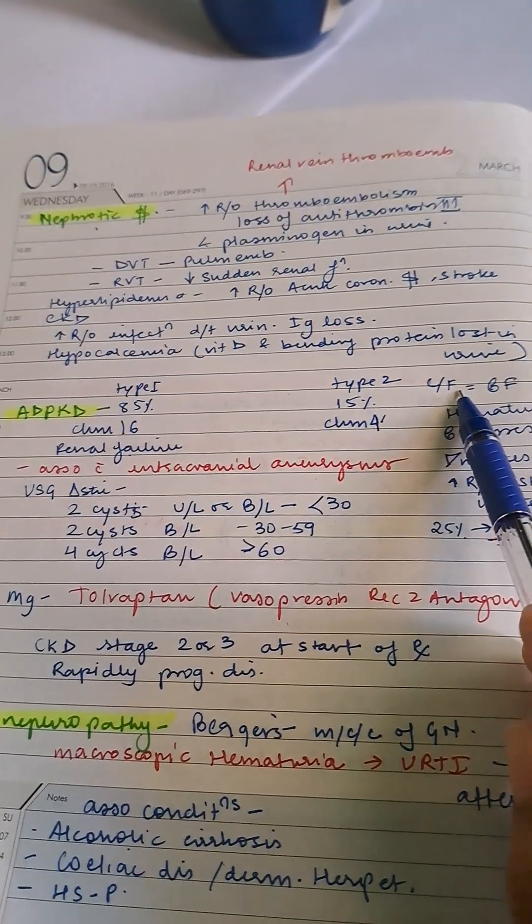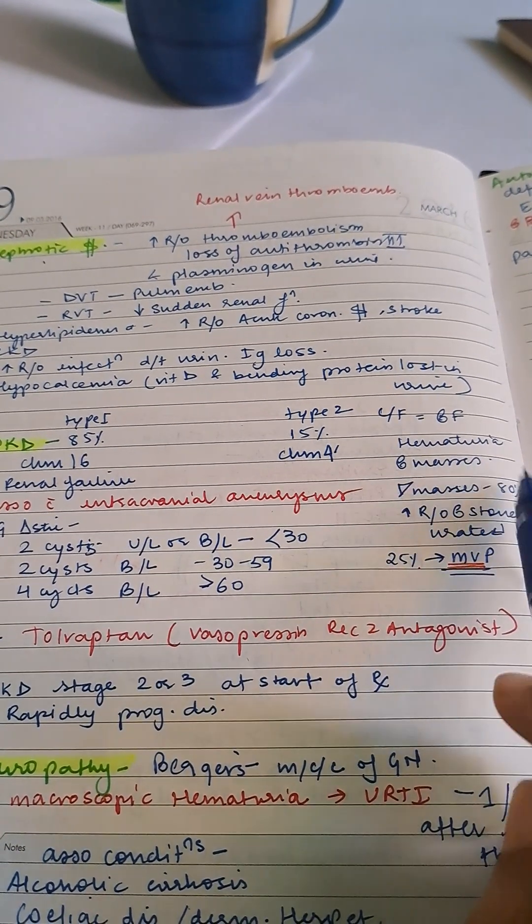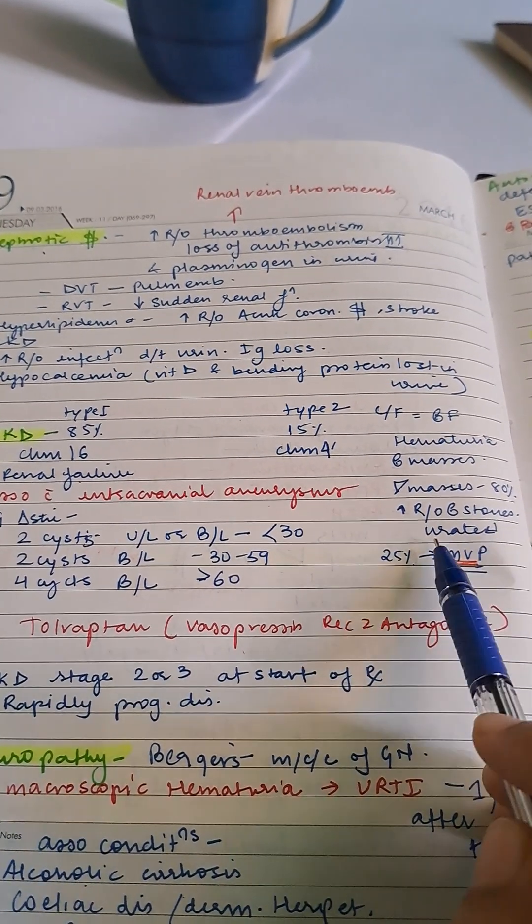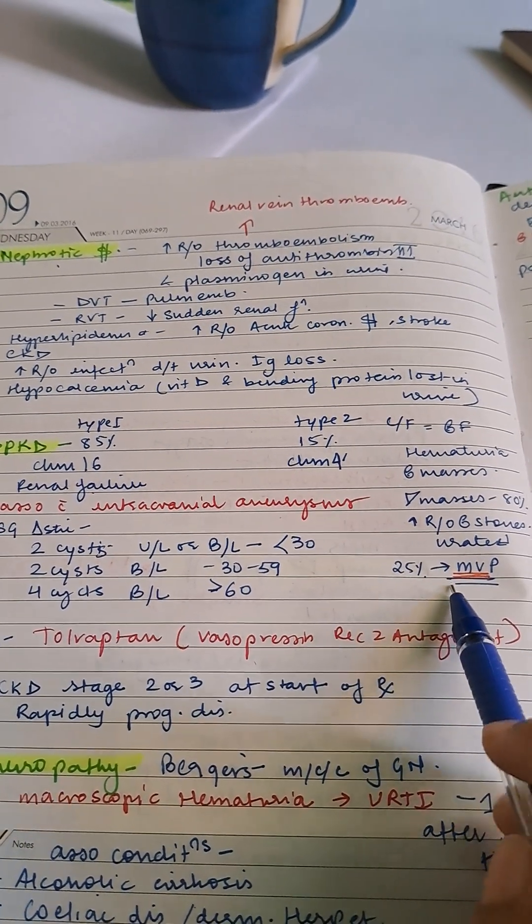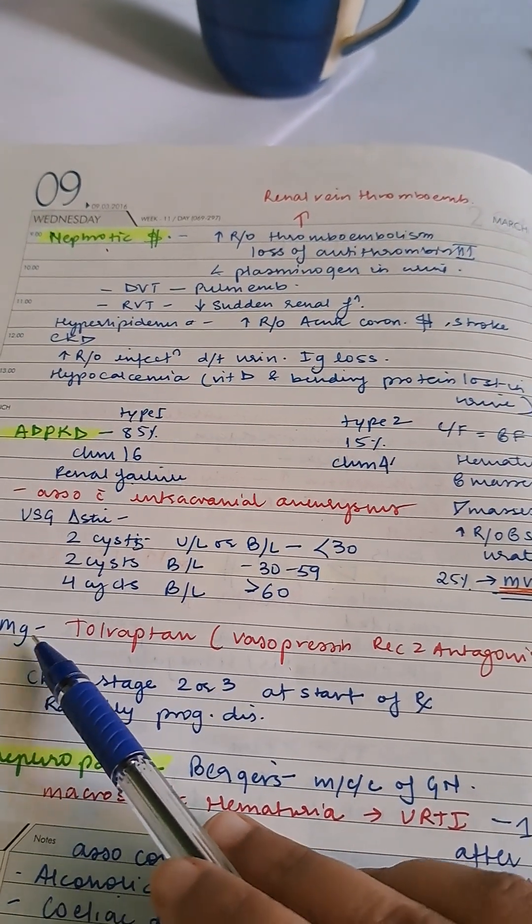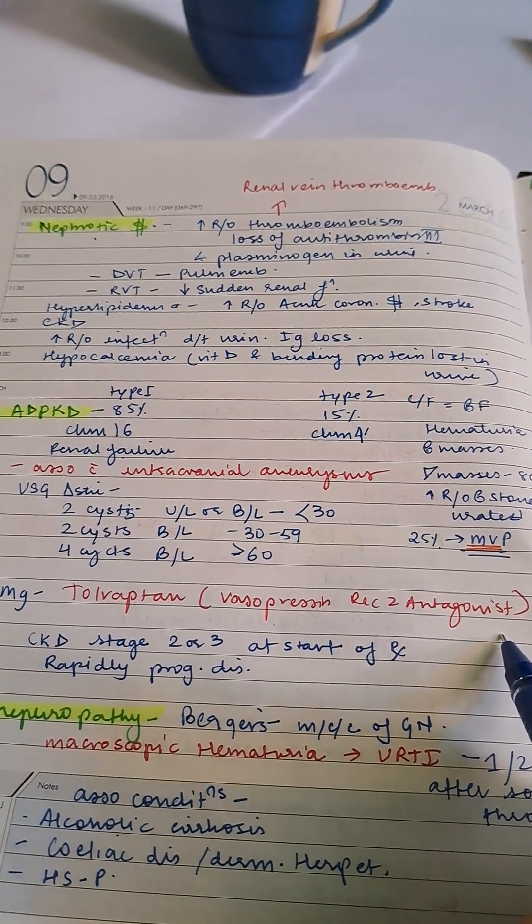Clinical features of ADPKD include renal failure, hematuria, renal mass, liver cysts in 80%, increased risk of urate renal stones, and 25% have mitral valve prolapse. Management includes tolvaptan, a vasopressin receptor 2 antagonist.